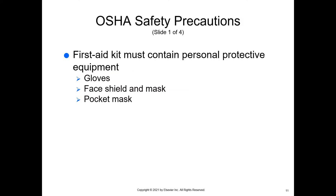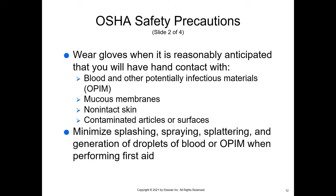OSHA safety precautions: first aid kits kept in any occupational areas must contain personal protective equipment — gloves, face shield and mask, or a pocket mask for administering rescue breaths or ventilations during CPR. OSHA, the Occupational Safety and Health Administration, a federal administration, says you must wear gloves when it is reasonably anticipated that you will have hand contact with blood or OPIM — other potentially infectious materials — which includes unfixed body tissue, other body fluids, mucous membranes, non-intact skin, and contaminated articles or surfaces such as blood-soaked gauze. Whenever possible, minimize splashing, spraying, splattering, and generating droplets of blood or OPIM when performing first aid.